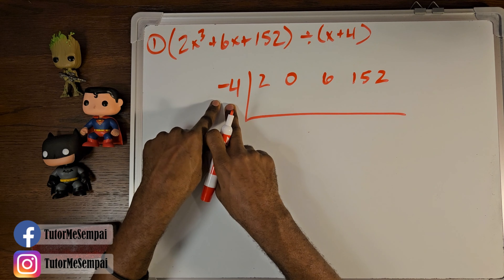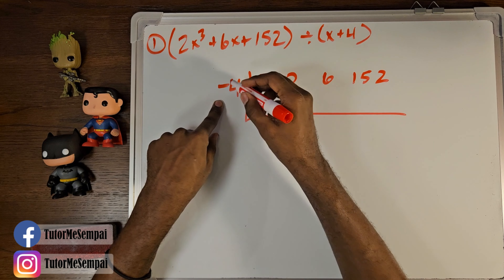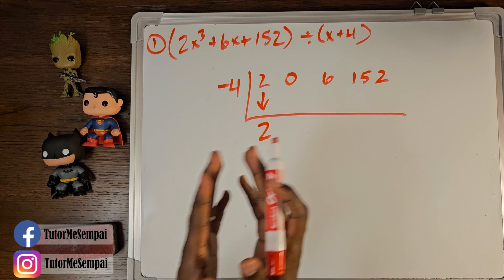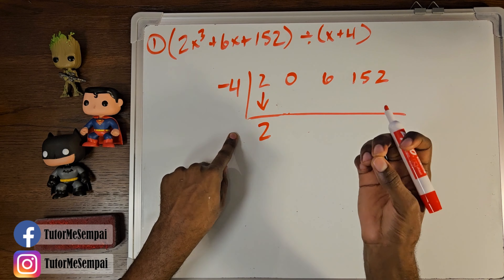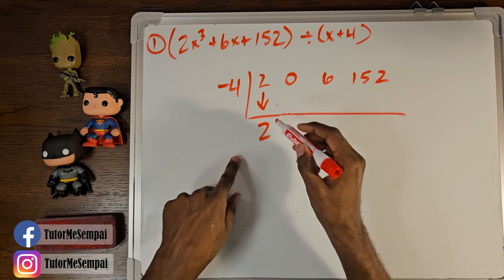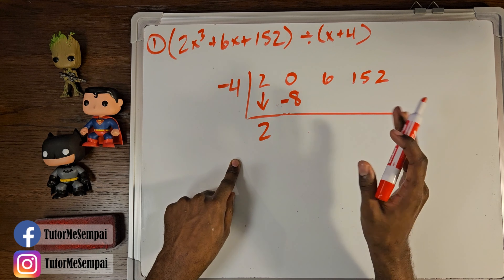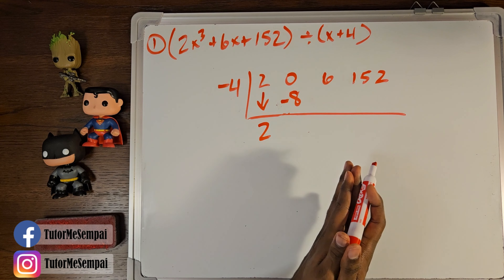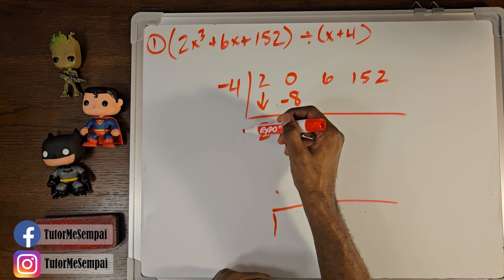First things first — we said this negative four is the potential root we're trying to test. The first thing you do is take this very first coefficient and pull it down. Unlike polynomial long division where the quotient goes on top, your answer is going to be below. Once you've brought down this first constant, you're going to take the divisor value out here and multiply it by that number you put here. So negative four times two gives us a negative eight. You put the result right here — and this is pretty similar to polynomial long division, where you take the divisor and multiply by whatever you put on top of the house.